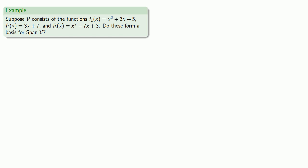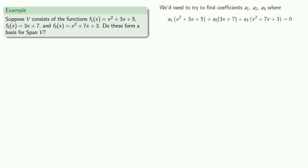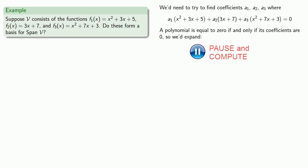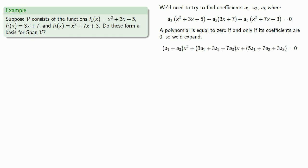With this idea in mind, the question is whether there's a linear combination of these functions equal to zero. We have to go back to algebra and remind ourselves that a polynomial is zero if and only if all of its coefficients are zero. So in order to determine whether coefficients a1, a2, and a3 can make this zero, we'll have to expand and collect our like terms.